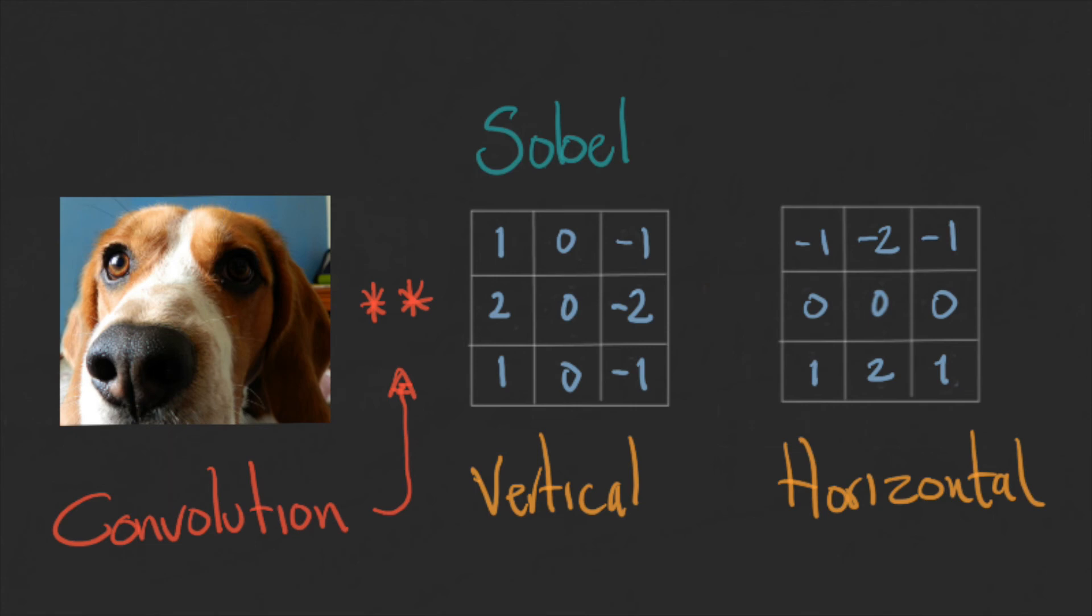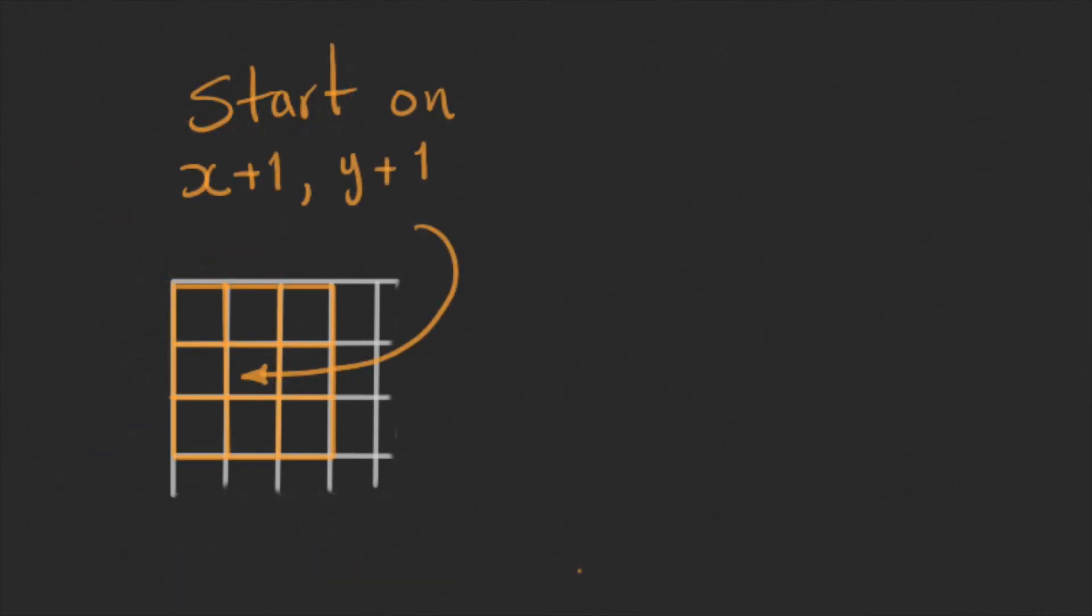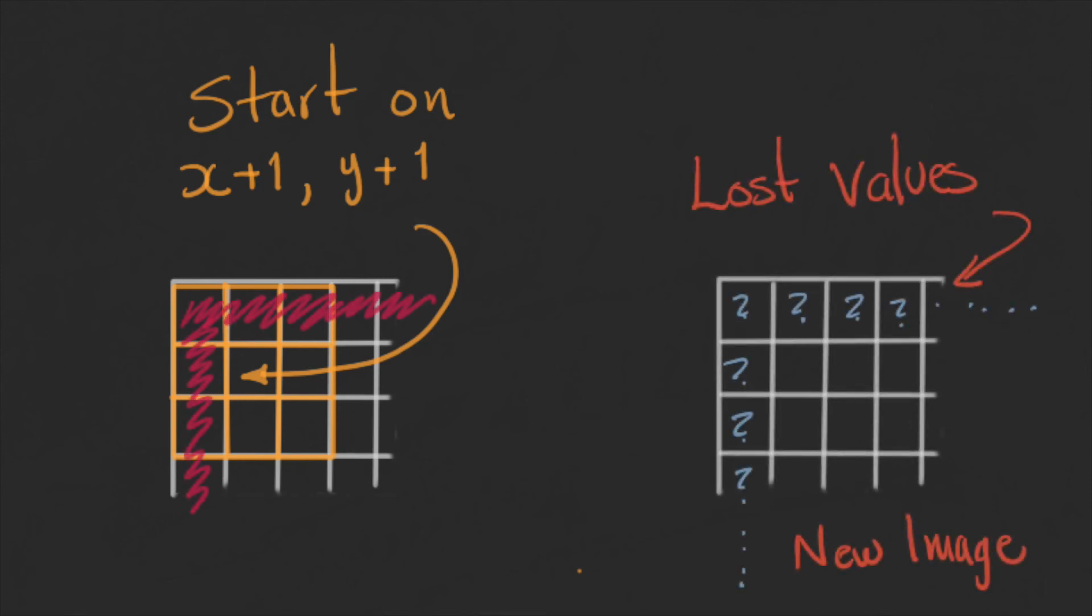Now, there is a common problem when we apply convolution to an image. In the edges, we have no data available to fill up the kernel. So there are several approaches to deal with this problem. The first one is to ignore the pixels that will result in an error. This can have an impact after several convolutions, because the final image will be significantly smaller than the original.